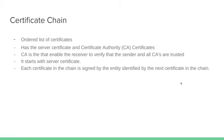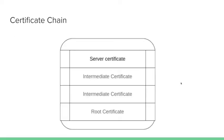A certificate chain is an ordered list of certificates. It has a server certificate and the certificate authority certificates. The certificate authority is the one that verifies that the sender and all the certificate authorities are trusted. The start is always with a server certificate — each certificate in the chain is signed by the entity identified by the next certificate in the chain. It always starts with the server certificate and ends with the root certificate, and between them there are intermediate certificates.